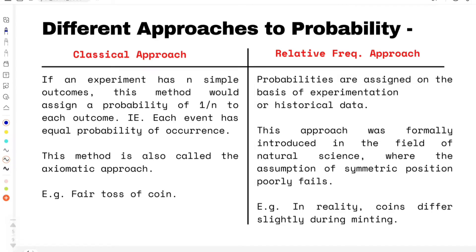In the classical approach, if an experiment has n simple outcomes, we assign a probability of 1/n to each outcome. For example, for a coin tossing experiment, there are two outcomes in total, so the probability that a head could occur or a tail could occur is 1/2.